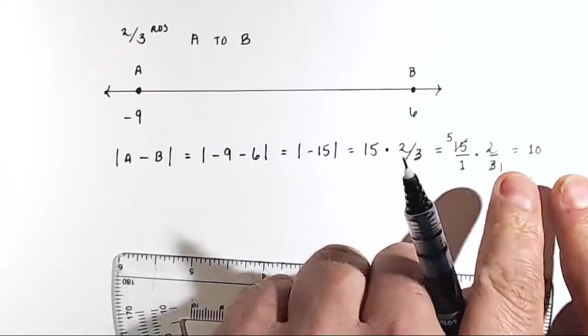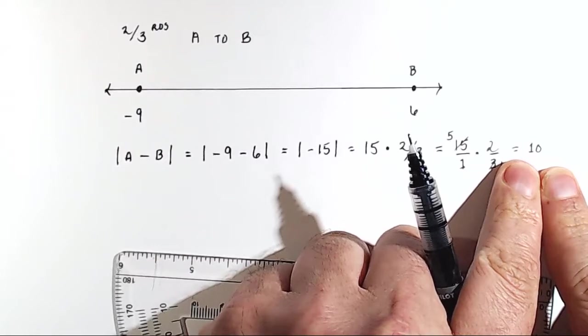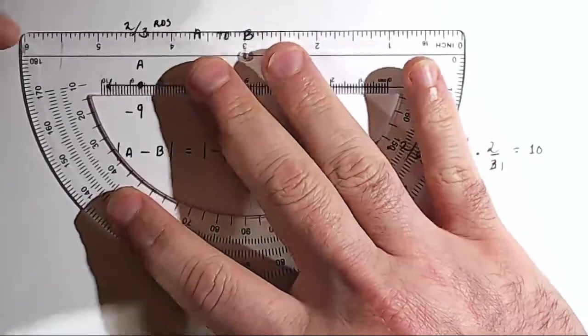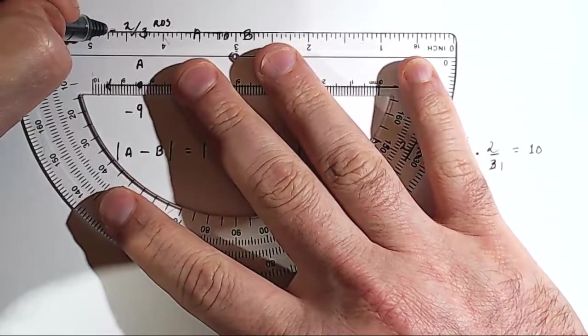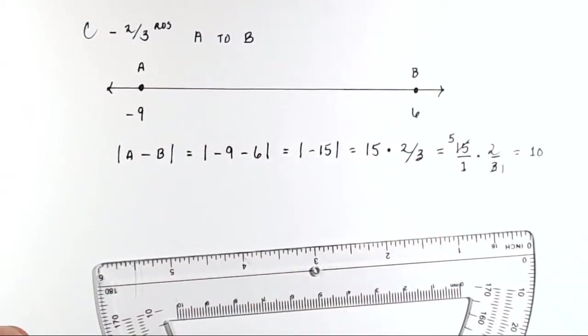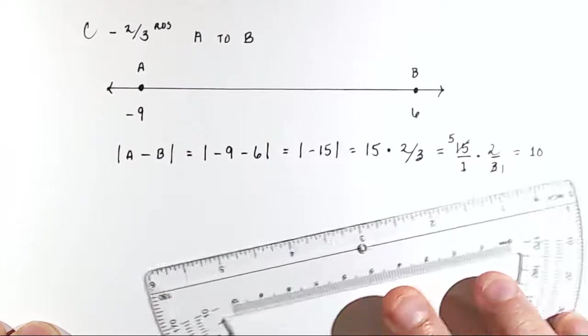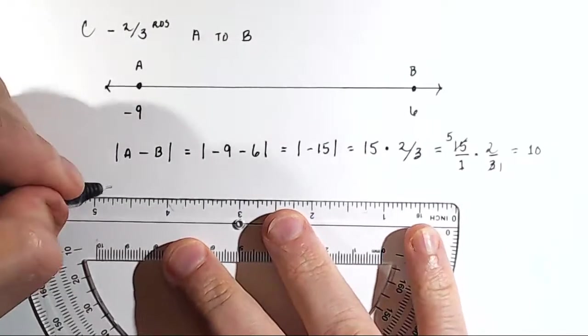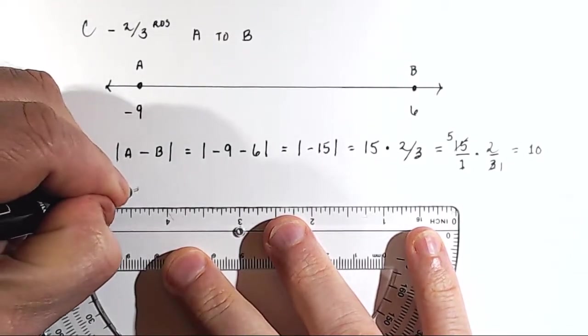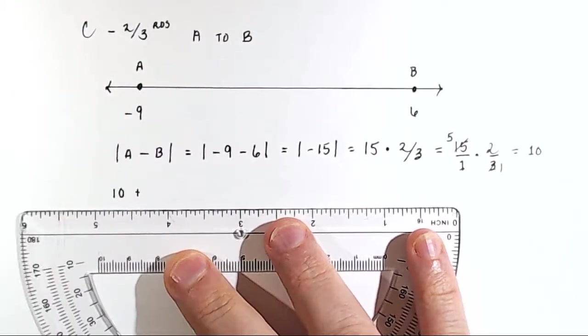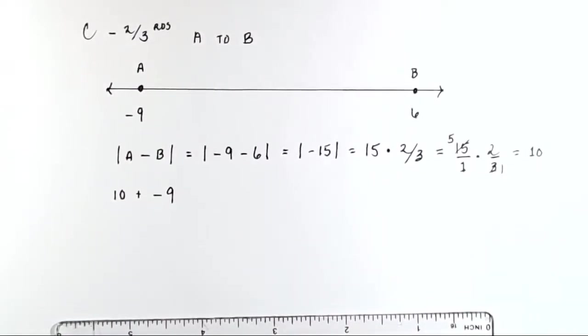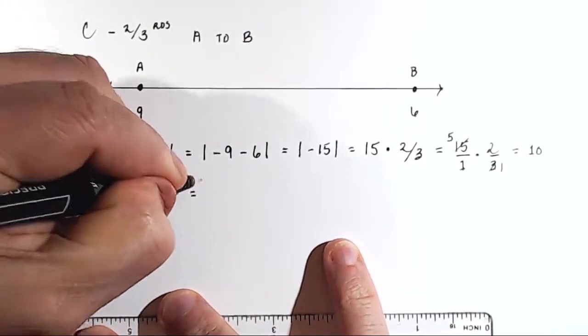So that is 2 thirds of the distance, but that is not the position of this new point C. Let's call this, we want to find point C. And C is going to be 2 thirds of the distance from A to B. So what do we need to do? We need to take our value of 10 and add it to the value we had for point A, which would be negative 9. So what is 10 plus negative 9? It is 1.